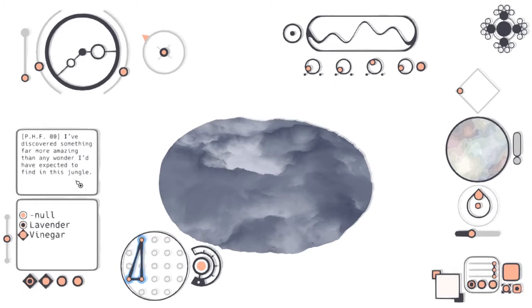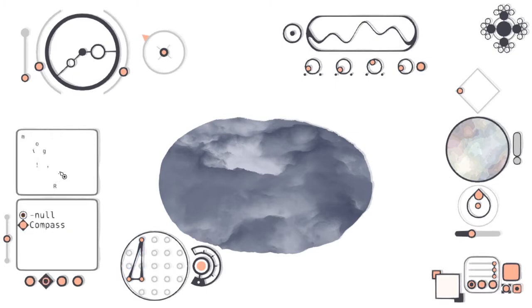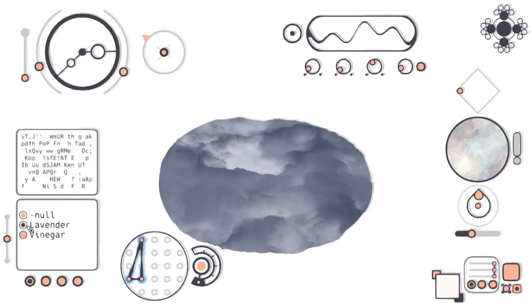So on the left here, we've got a little bit of information. We've got I've discovered something far more amazing than any wonder I'd have expected to find in this jungle under lavender and vinegar. It's a path to a new place somewhere beyond the known land, and as you can see when you change these the blue changes over here. The blue is a guide, it's trying to help you find something.